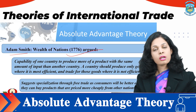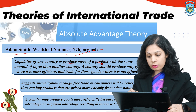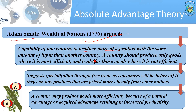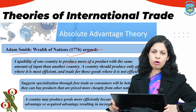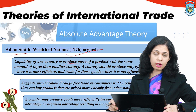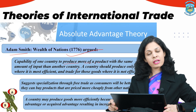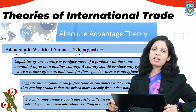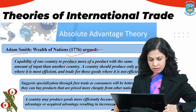Adam Smith proposed the absolute advantage theory in his book 'Wealth of Nations' in 1776. It proposes that a country should produce only goods where it is most efficient and trade for those goods where it is not. For example, Pakistan uses 15 units of labor for one unit of cloth while India uses 20 units for the same amount. So India should trade wheat to get cloth from Pakistan — a beneficial condition for both countries.